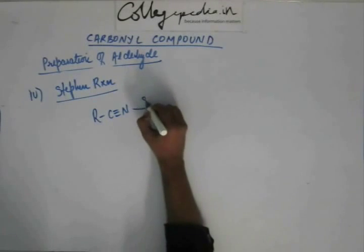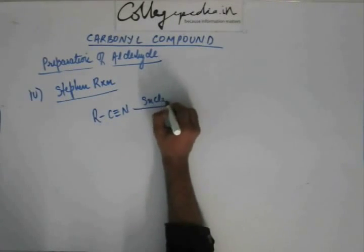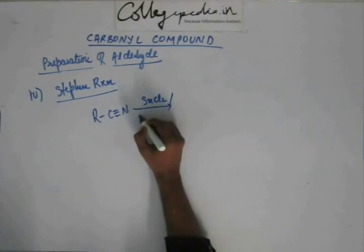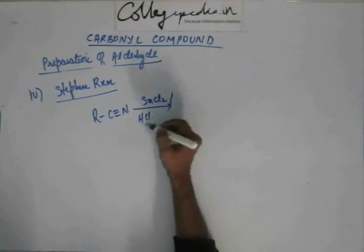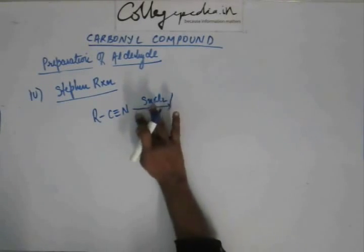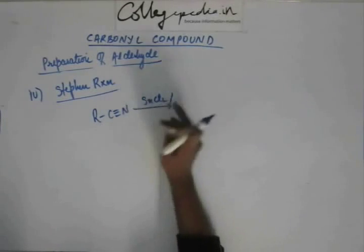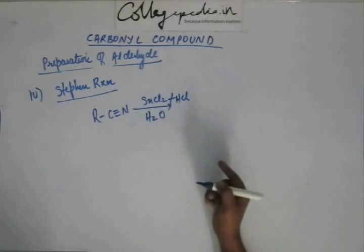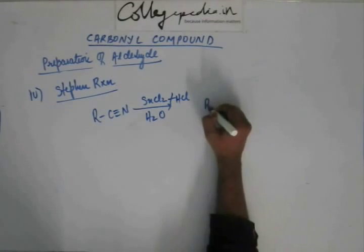On cyanide we add SnCl2 stannous chloride, together with HCl, and after that we add water. Water basically will carry out hydrolysis. Then we get aldehyde.